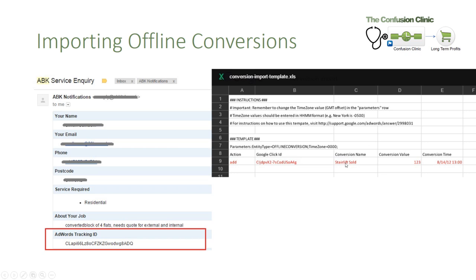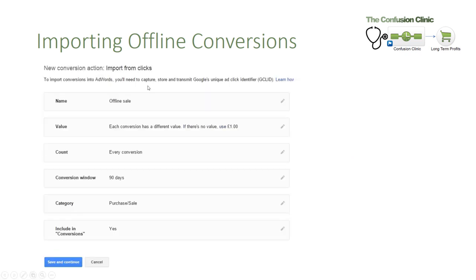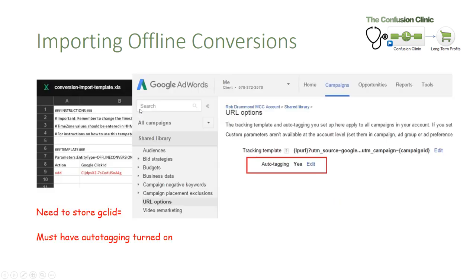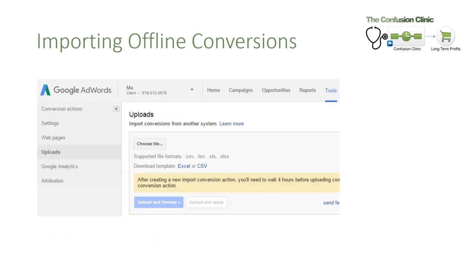In the spreadsheet, the conversion name would be whatever name you gave your imported conversion — in this case 'offline sale.' So you'd have your Click ID, the conversion name 'offline sale,' and the conversion value. You then upload this spreadsheet into AdWords by going to Tools, Conversions, Uploads. Because the Click ID tells Google what ad and keyword was clicked on, Google will record the conversion with the actual conversion value in the correct place.